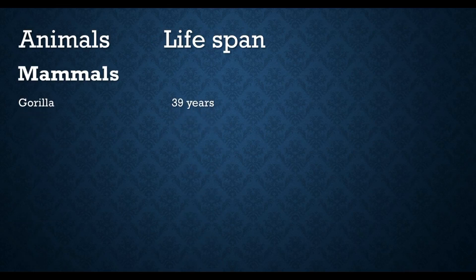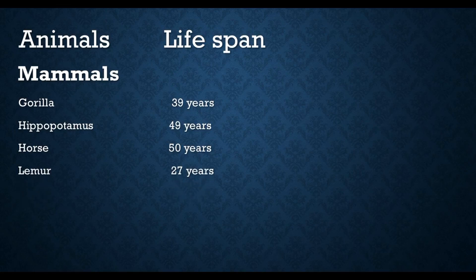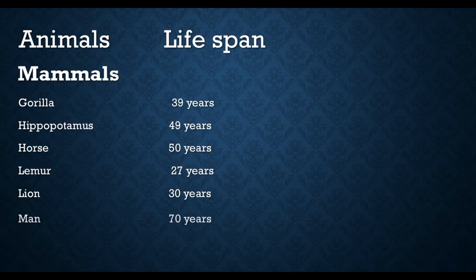Gorilla average lifespan is 39 years. Hippopotamus lifespan is 49 years. Horse lifespan is 50 years. Lemur lifespan is 27 years. Lion lifespan is 30 years. As zoologists, we should know the average lifespan of animals.